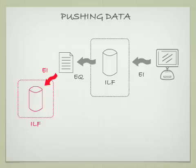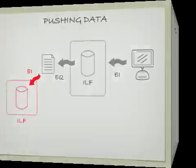So again, the gray EI maintains the gray ILF, which creates a gray EQ, and from that we have a red ILF and a red EI.